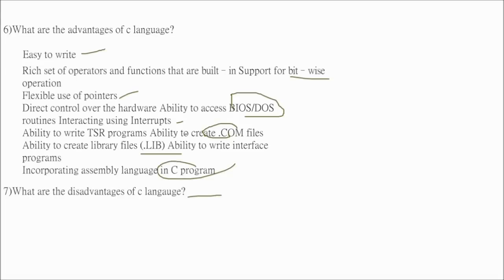Ability to create .lib library file to write interface programs and incorporating assembly language in C program. This can be done. This is why C is such a strong language.